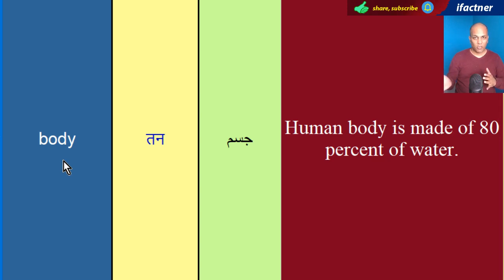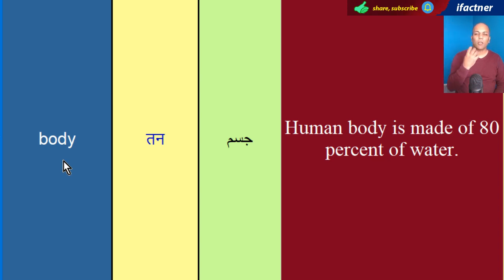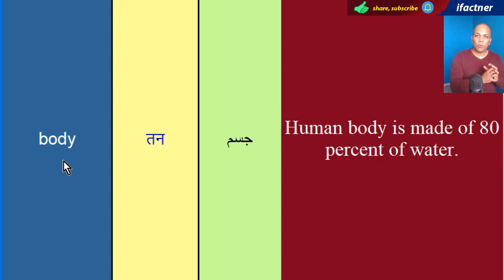Car body. Ya body, joh hai, hum us ko bhi use karte hai — jisem kooi ek organization hai aur us mein kuch loog joh hai, kisi kaam ko oversee kar rahe hai, toh hum us ko bhi body kahaen ge, wo joh group hoga.